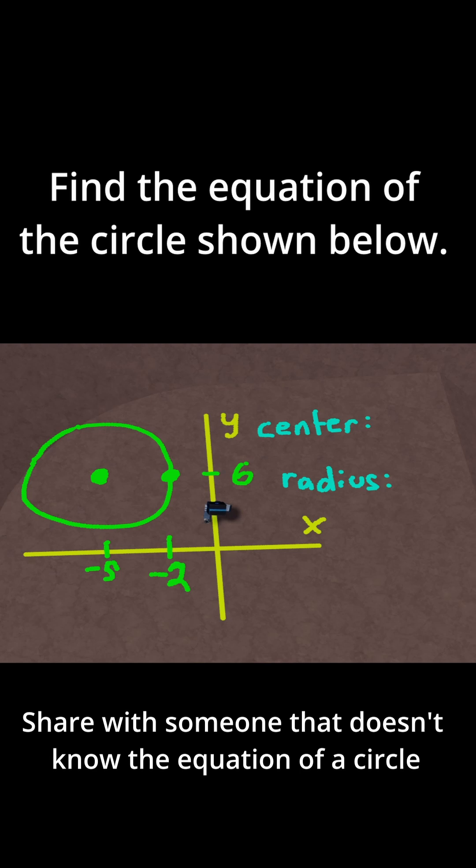First the center, which is right here, is clearly just minus five comma six. So let me write that down. Minus five comma six. You can just read that directly from the graph because this is five for your minus five for your x coordinate and six for your y coordinate.